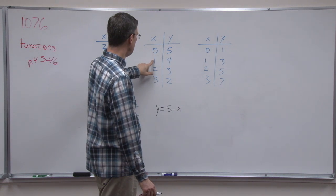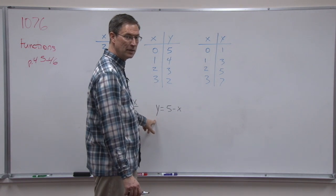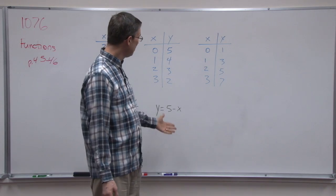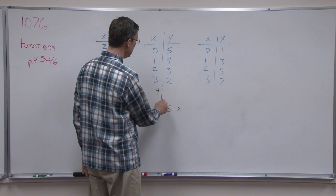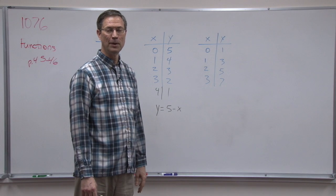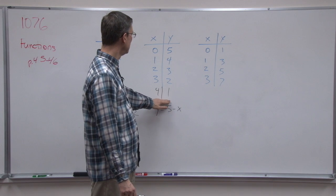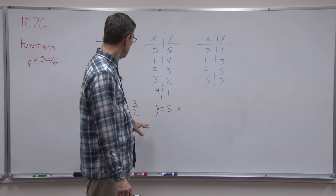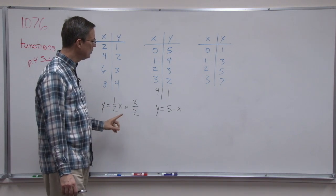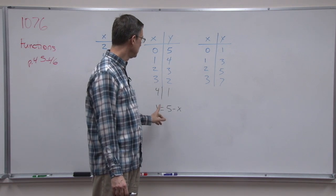Plug in 1, 5 minus 1, and it gives me the y value of 4. You see how this is working? Plug in 2, and you get 3. Plug in 3, you get 2. I could keep going. I could plug in 4 up here. Let's see what would I get if I plugged in 4. I'd get 1. So this pattern is representative of this rule.